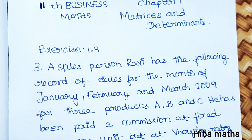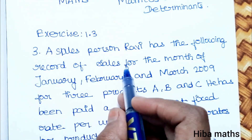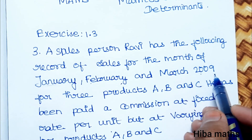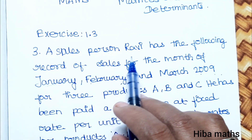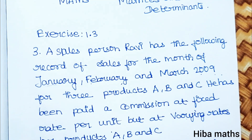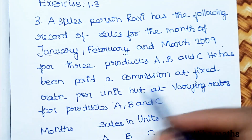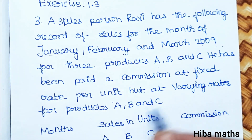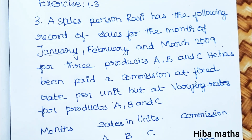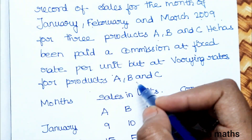Third question: a salesperson Ravi has the following record of sales for the month of January, February and March 2009. He has been paid a commission at varying rates for the products A, B and C.